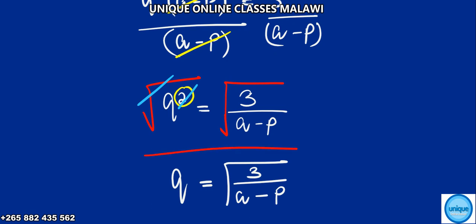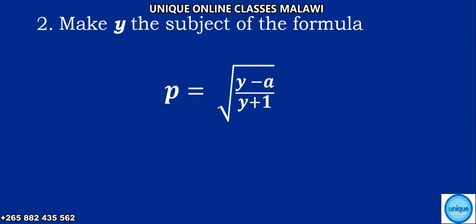Now they make P the subject of the formula. In this problem P is equal to square root of y minus a divided by y plus 1. Solution: what we need to do is square both sides to remove the square root. So I'm going to introduce a square on both sides.